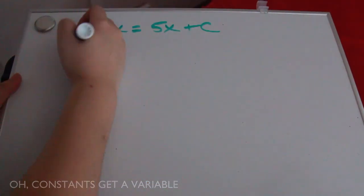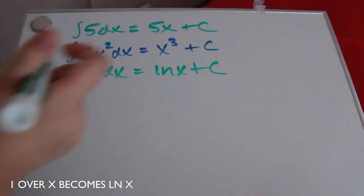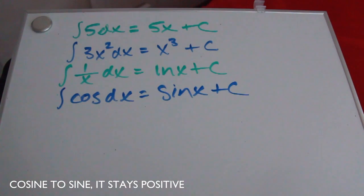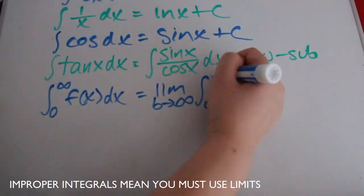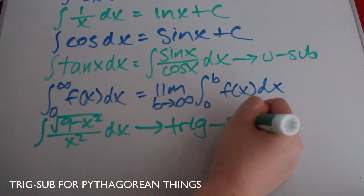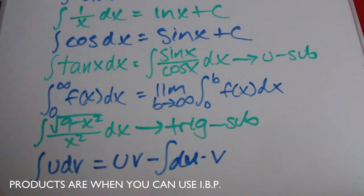Constants get a variable. Reverse power rule for polynomials. 1 over x becomes ln x. Cos and sine switch to its positive. U-sub when you see derivatives. Improper integrals meaning you must use limits. Trig sub for Pythagorean things. Pronto start when you can use IVP.